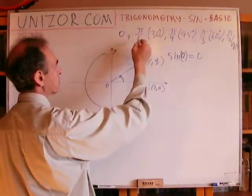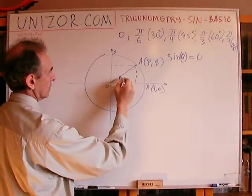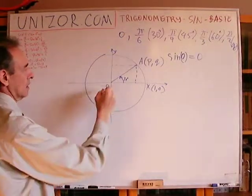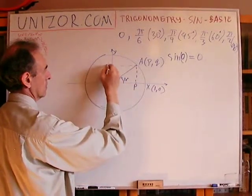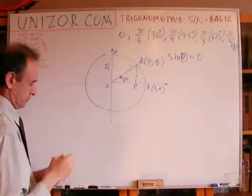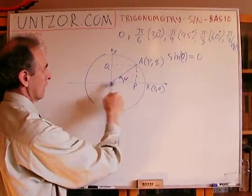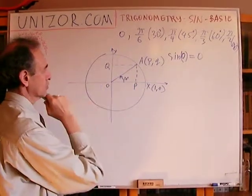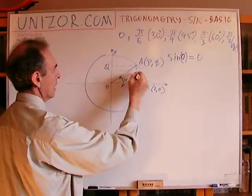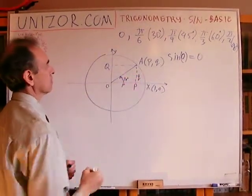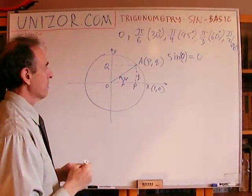Next. Next is π over 6, which is 30 degrees. So if this is an angle of 30 degrees, let's consider this particular right triangle APO. Now, in this right triangle, P is a projection from A to X axis, Q is a projection to Y axis. So this particular cathetus is equal to lowercase p, and this particular cathetus is equal to Q because the coordinates are P and Q. Now, what do we know about this triangle?